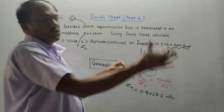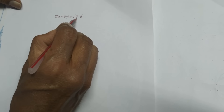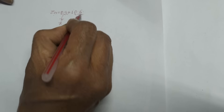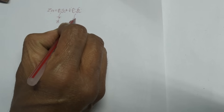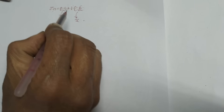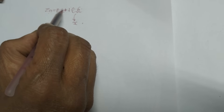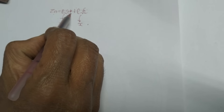Now let us move to the Smith chart. The calculated normalized impedance is 0.5 + j0.6. The real part 0.5 represents the value of R, and 0.6 — the part multiplied by j — represents the imaginary part X. Since there is a plus sign, we consider the upper portion of the Smith chart.